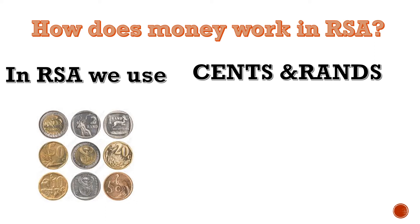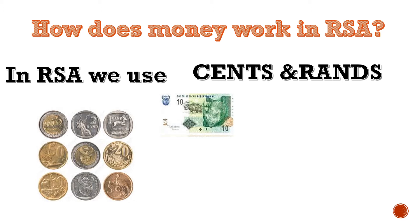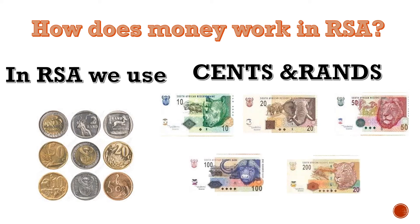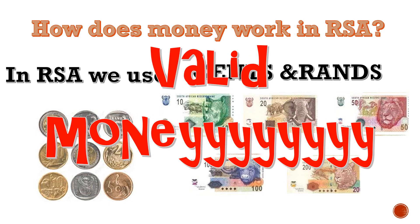And then we have a 5 cent, a 10 cent, a 20 cent and a 50 cent in brown coins. We also get the 10 rand, the 20 rand, the 50 rand, the 100 rand and the 200 rand. And this for today's lesson we will call valid money.